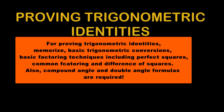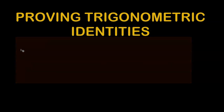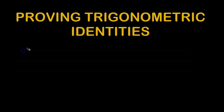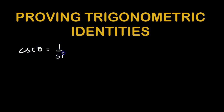In this video we'll be learning how to prove trigonometric identities. We'll use all the formulas discussed in previous lessons, including the compound angle formula and the double angle formula. We also need to know a few formulas from previous grades. For example, cosec theta can be written as one over sine theta, and secant theta can be written as one over cos theta.